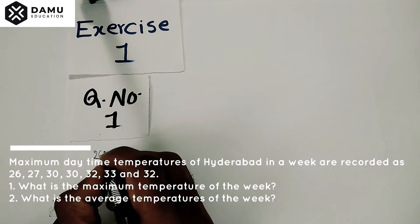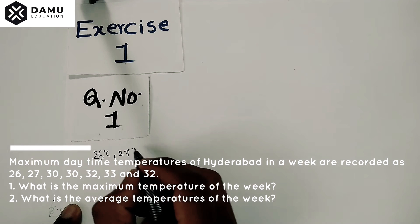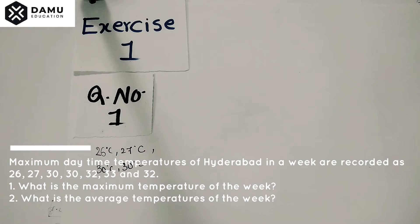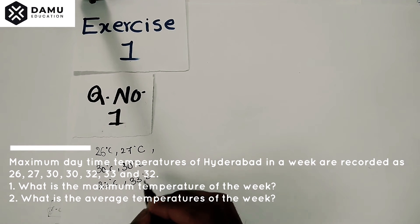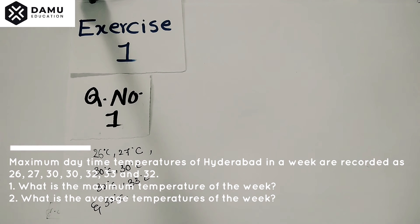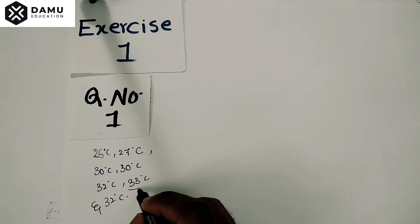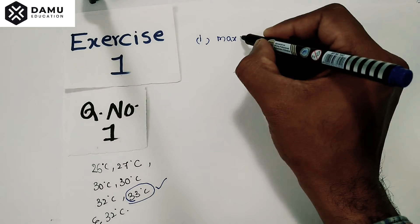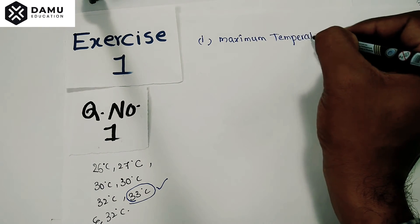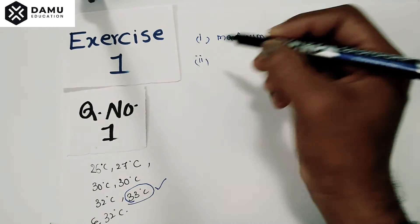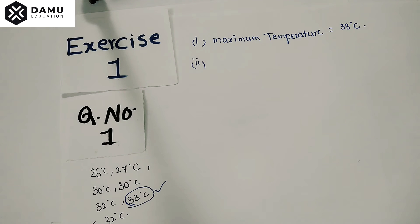The temperatures given are 26°C, 27°C, 30°C, 30°C, 30°C, 32°C, 33°C, 32°C, and 33°C, and finally 32°C. The first question asks: what is the maximum temperature of the week? The maximum temperature is 33 degrees Celsius.